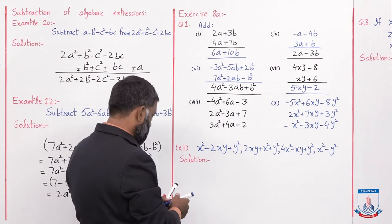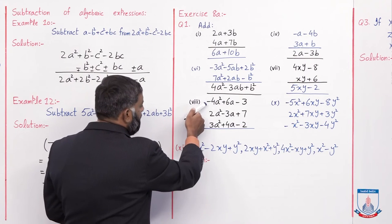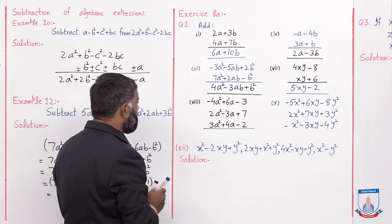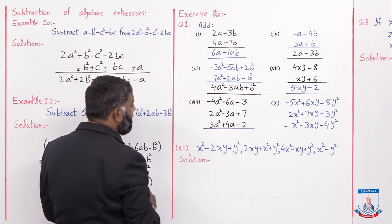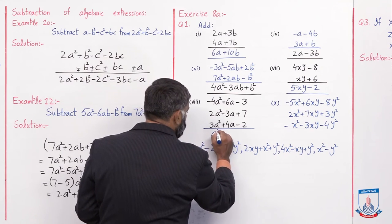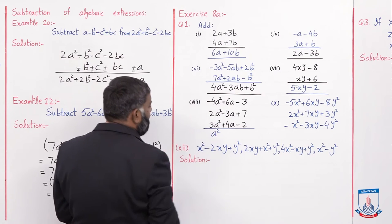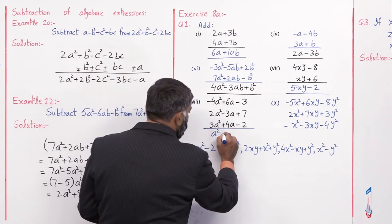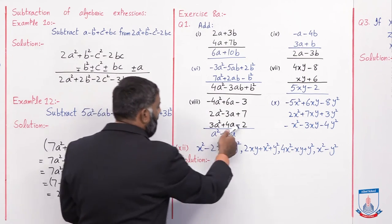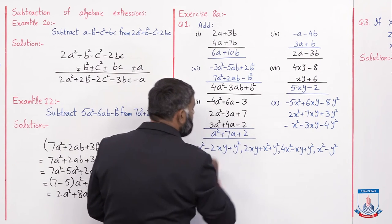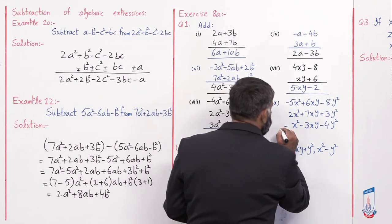Part 8: teeno like terms hain a², a², a². Minus 4 + 2 = minus 2, minus 2 + 3 = 1, to yahan a² aajega. 1 likhna zaroori nahi hota. Yeh teeno bhi like terms hain: plus 6 - 3 + 3, plus 4 + 7a. Minus 3 + 7 + 4 - 2 = plus 2. Yeh iska final answer hoga. Aur ab 10th part hai.